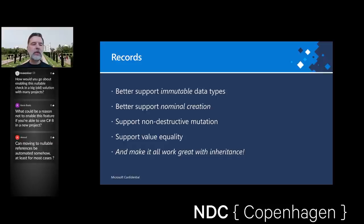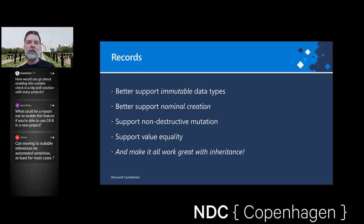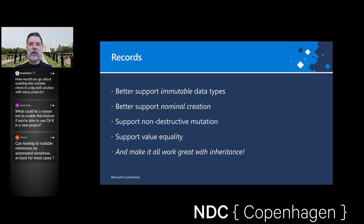One of the big points here is that we want all these features to work well with inheritance. That turns out to be really important because inheritance is a key feature in C#, and a records feature isn't really worth its salt in an object-oriented language if it isn't robust across inheritance hierarchies. So that's been one of the things really important for us to work out before we go public with this feature.